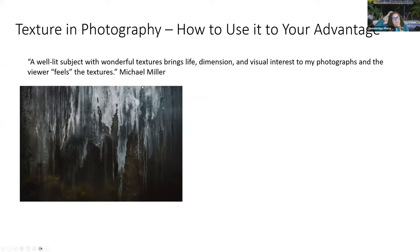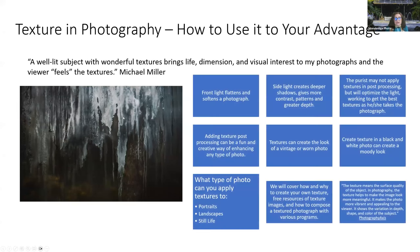There's a quote by Michael Miller. You want to think about textures when you're taking a photo. Is it the photo you're taking that has texture in it, or is it a photo that needs to be fixed? Michael says if you have front light, it flattens and softens the photograph. Side light is better because it creates a deeper shadow and gives you more contrast, patterns, and greater depth. The purist may not apply textures in post-processing — they may want to get their textures when they take the photo. But if you don't always have the optimal light, you may need to add some texture to make it more interesting.